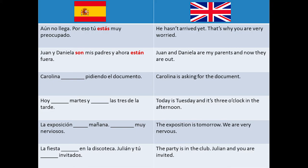'Carolina pidiendo el documento' — Carolina is asking for the document. In this case, we are talking about the present continuous, so we use the verb estar. We haven't seen this verbal tense yet, but I think it is pretty easy to notice and to understand.